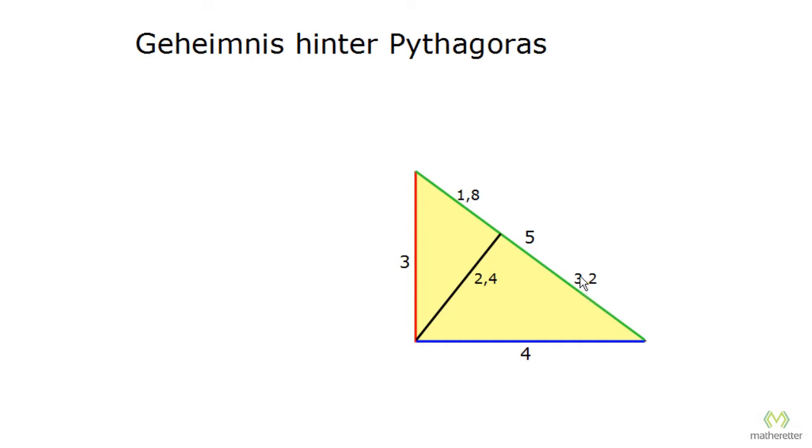What interests us now are the areas of the partial triangles. We get the area of the left triangle by multiplying 1.8 by 2.4, divided by 2, and we get 2.16 square centimeters. And right here the same principle: 2.4, the height, times 3.2, divided by 2, and we get 3.84 square centimeters.